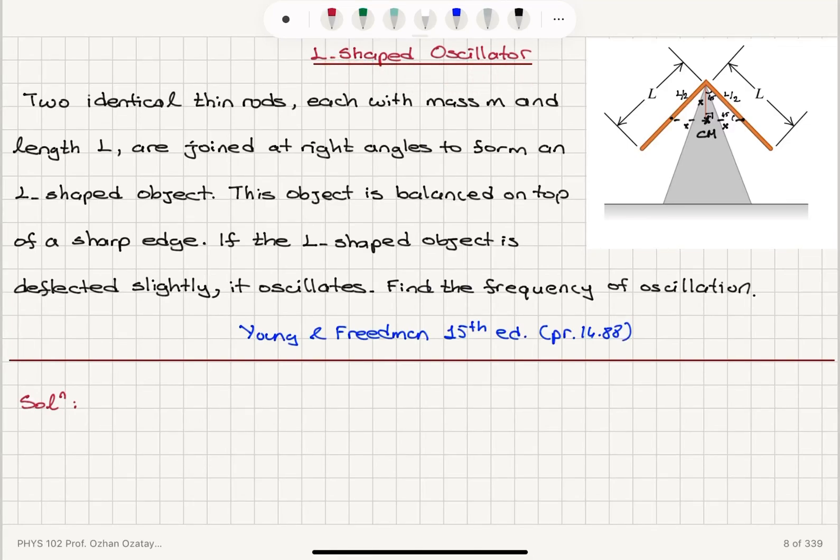L-shaped oscillator. Two identical thin rods, each with mass M and length L, are joined at right angles to form an L-shaped object. This object is balanced on top of a sharp edge. If the L-shaped object is deflected slightly, it oscillates.